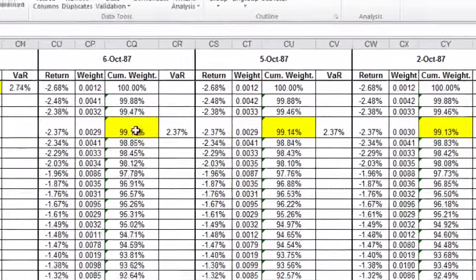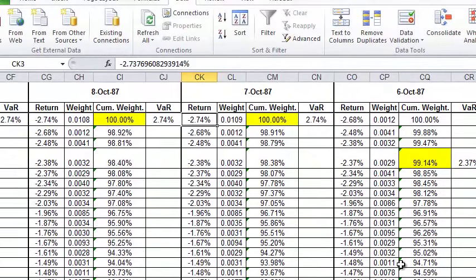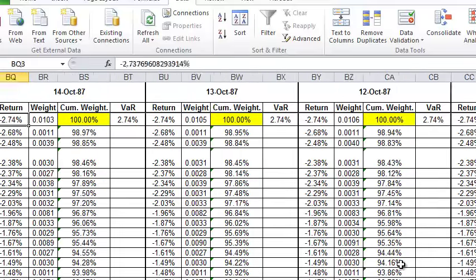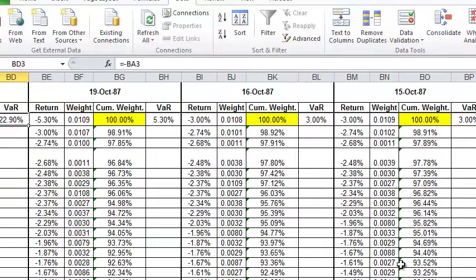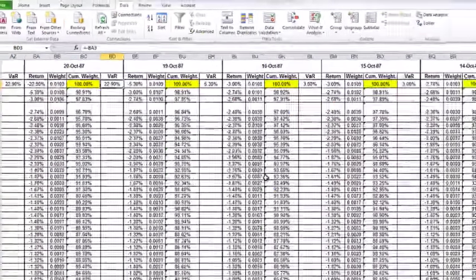As we change from day to day, now we have a return of minus 2.74 that goes in. In this case, this adds up already to more than 1%, so the value at risk is now 2.74. As we move closer to Black Monday, the Black Monday return is minus 22.9%, which would be the value at risk.